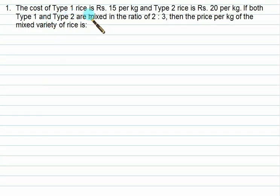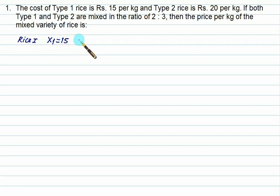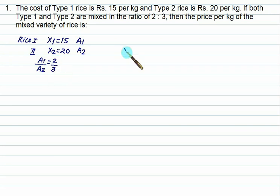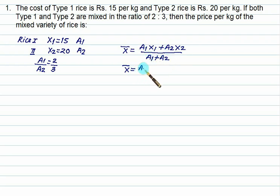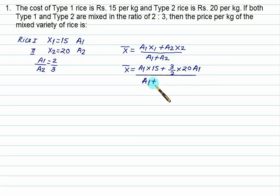The cost of type 1 rice is 15 per kg and type 2 rice is 20 per kg. Both types are mixed in the ratio 2 by 3. Find the price per kg of the mixed variety. Using x bar equals a1·x1 plus a2·x2 divided by a1 plus a2, we substitute a2 as 3 by 2 times a1. A1 cancels out and we get the mean price equal to 18 per kg.